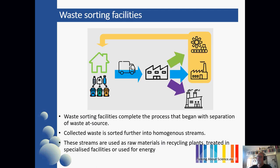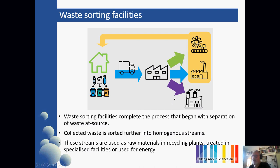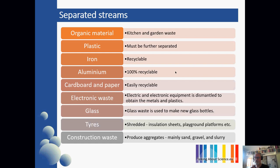Waste sorting facilities: your stuff is collected and transported, and the waste is then selected and sorted in larger-scale facilities. Part of this is where it's going to end up according to what it is and the state it's in. You may have recovery of energy, a secondary feedstock, or it may be completely recycled back to what it was originally as a product. According to what you're doing, you will have different waste streams.